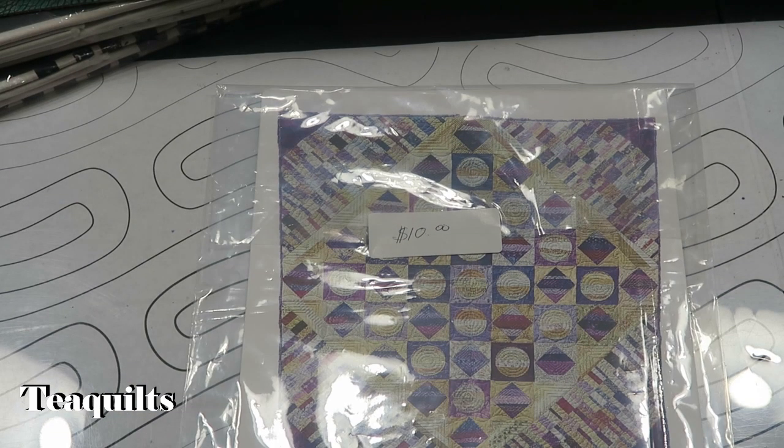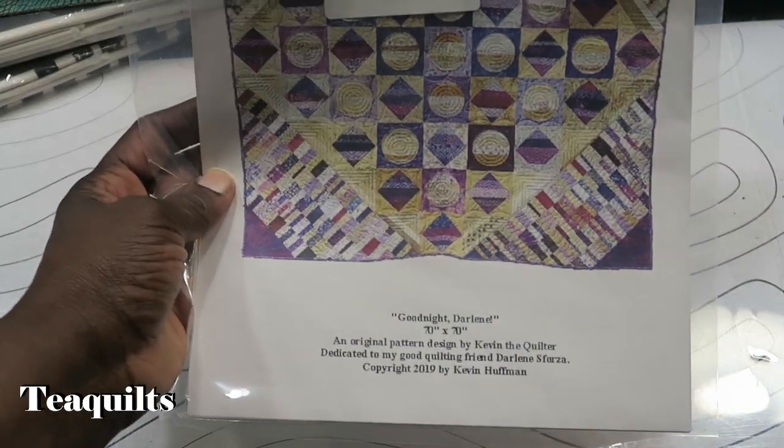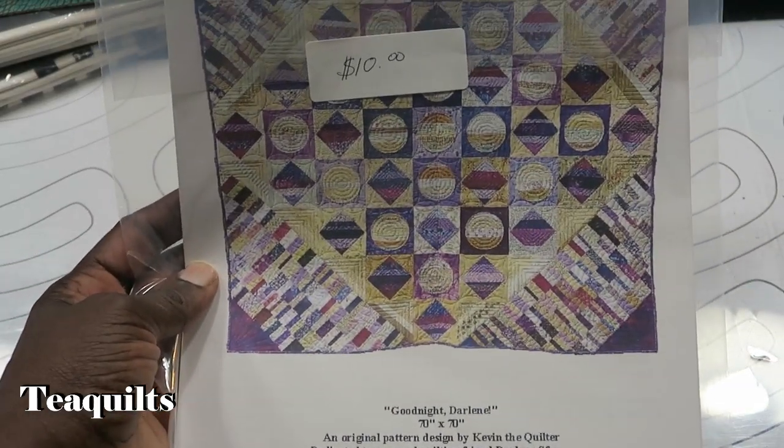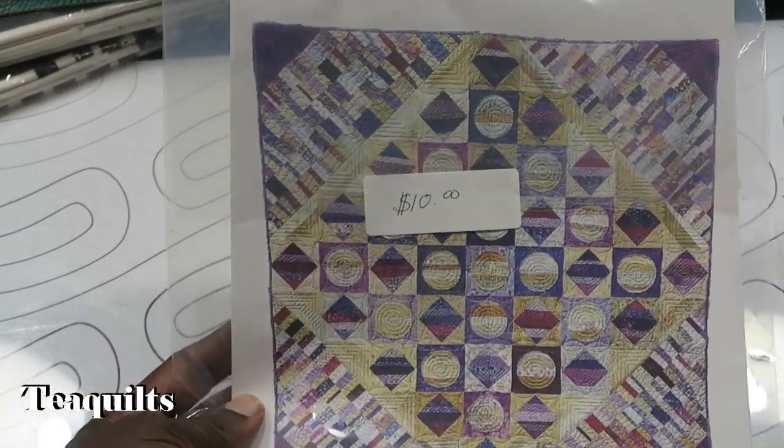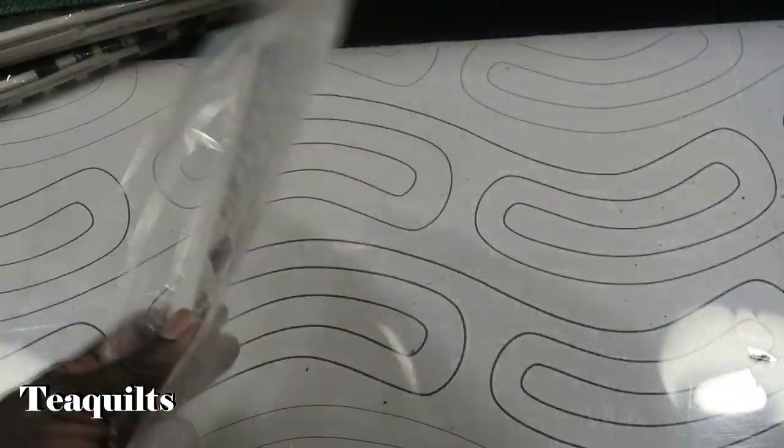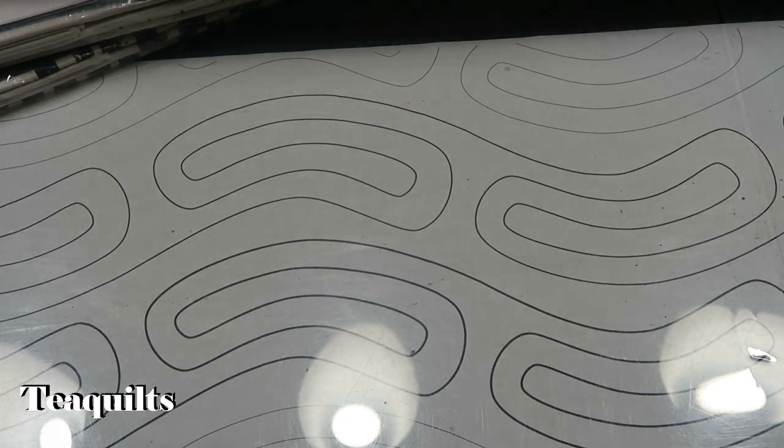Kevin the Quilter has a pattern that is called Goodnight Darlene. It is $10. He was kind. I was going to purchase it from him, but he was kind and gave it to me instead. Very nice pattern instructions.